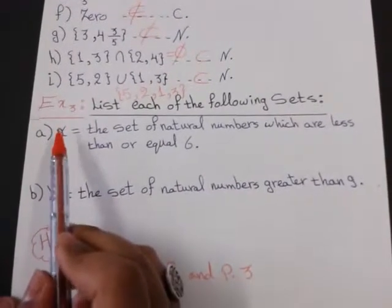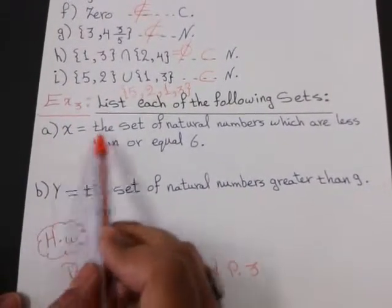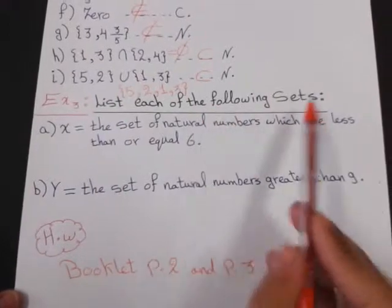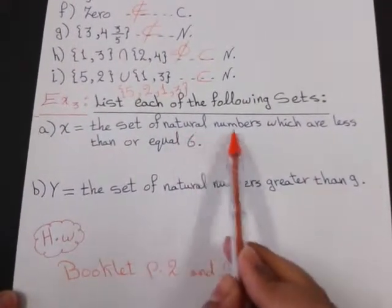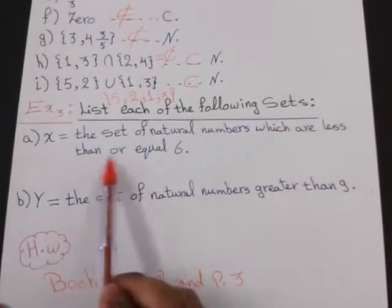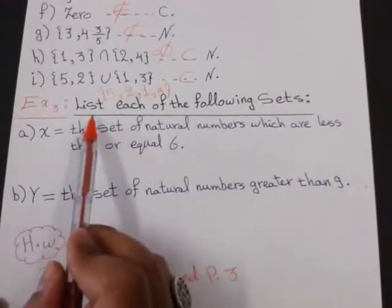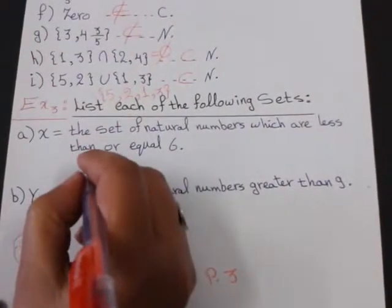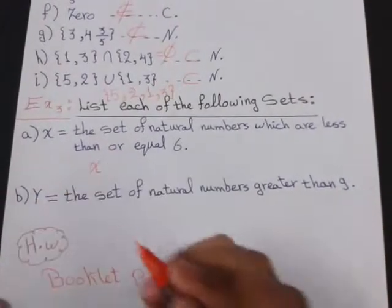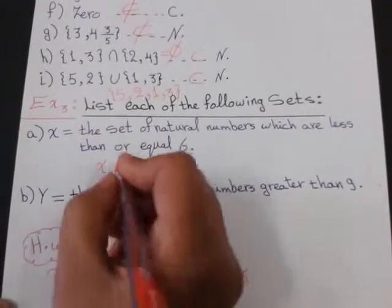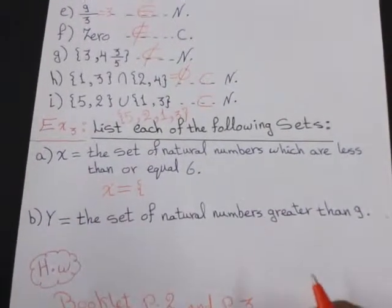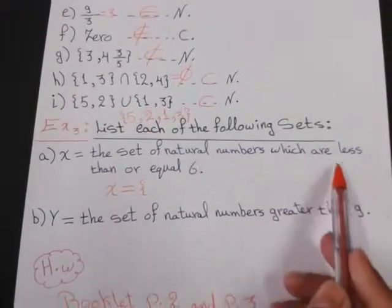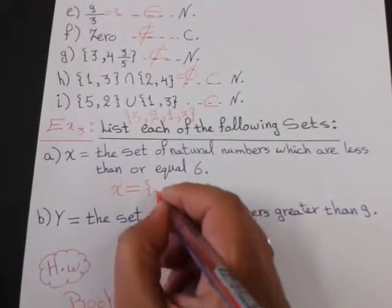Example number 3. List each of the following sets. X equals the set of natural numbers which are less than or equal 6. List means I make a listing method. The first step. Write the name of the set by capital letter. Then open braces.